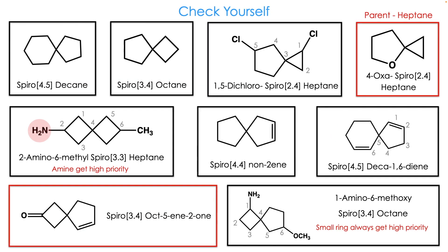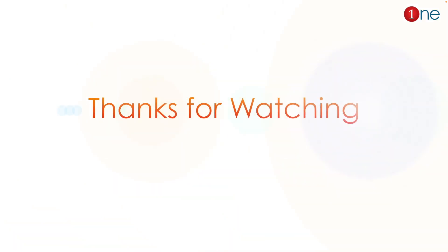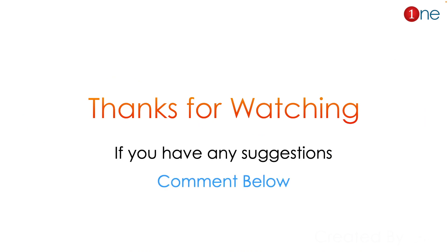Here are some examples to practice yourself. Always count the hetero atom as a carbon during ring size calculation. When ring sizes are the same, functional groups get higher priority. Always give the smaller number higher priority, even against a higher-priority functional group. Numbering always starts from the smaller ring. That's all from this video — thanks for watching!